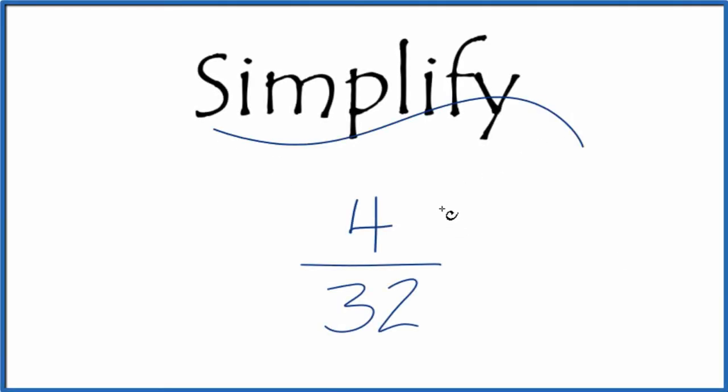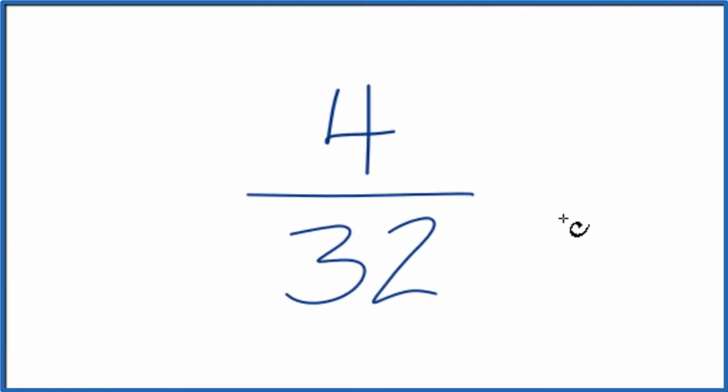Here's how you can simplify the fraction 4 32nds. What we want to do is find another fraction that's equal, called an equivalent fraction, to 4 32nds, but it has the same value. We've just simplified it to lowest terms.